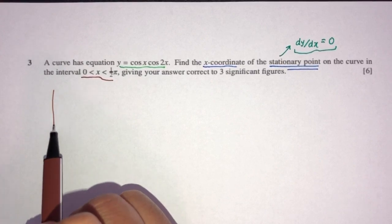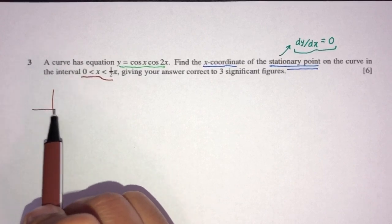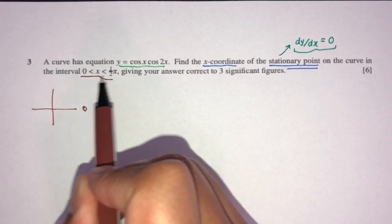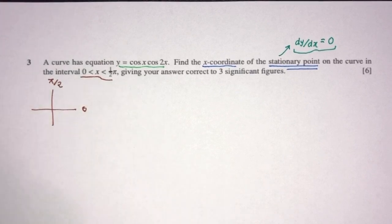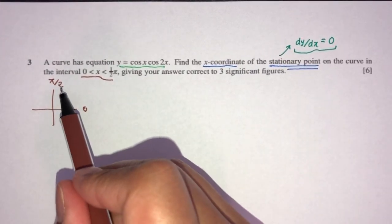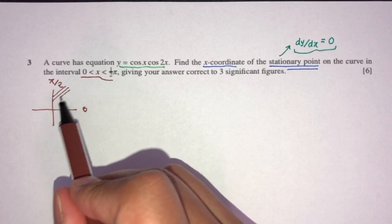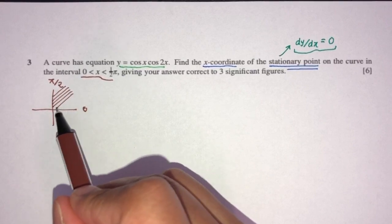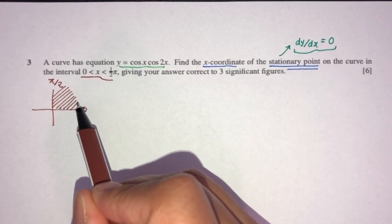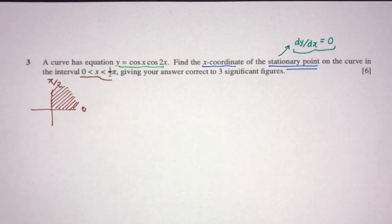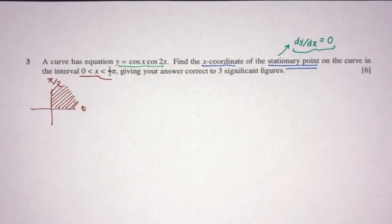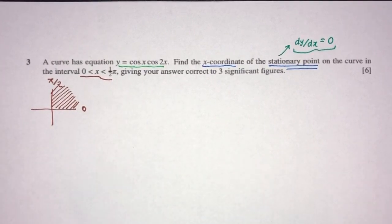For this interval — this is 0, pi over 2 is here, which is 90 degrees in radians — it can only be in the first quadrant. We only care about the first quadrant here. The reason I'm doing this is because I know by doing this, it will help me save time when I solve this question.